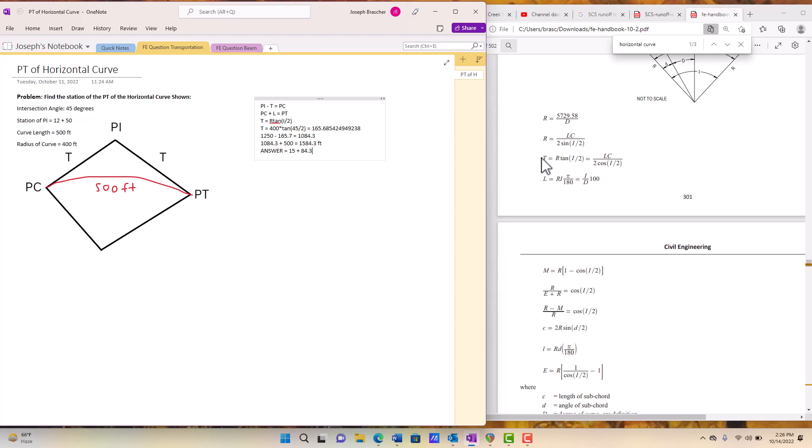So we used the FE manual tangent equals R tan i over two with that intersection angle to calculate that. We subtracted the PI minus T equals PC and then added the curve length to find that final stationing.